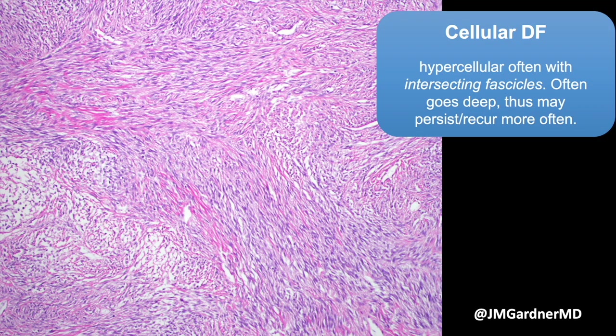Cellular dermatofibroma — my mentor Sharon Weiss liked to reserve this term particularly for dermatofibromas that were big, deep, cellular, and had intersecting fascicles. Some people use it for any large, hypercellular DF. There's not a perfect definition in the literature. The important point is that cellular DFs can look scary — they can make people think of fibrosarcoma, DFSP, or even leiomyosarcoma because of the fascicles.